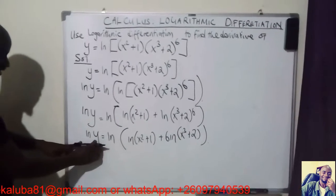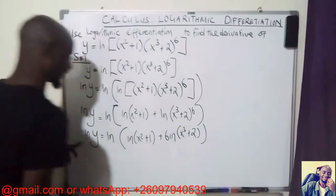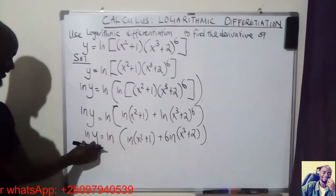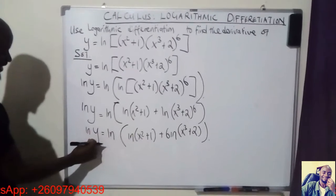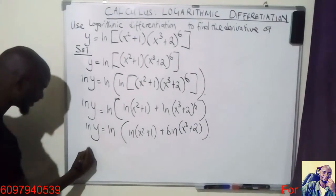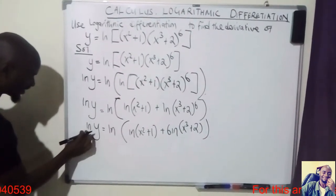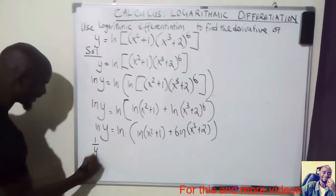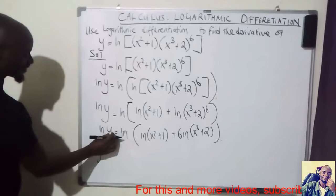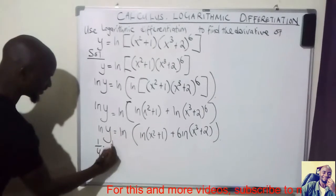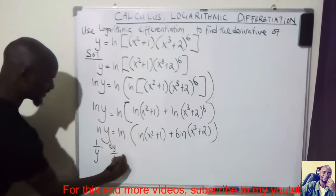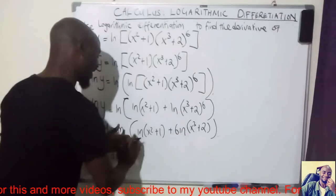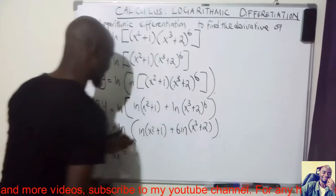Now I can differentiate both sides. We have ln y on the left, so differentiating using implicit differentiation I attach dy/dx. The derivative of ln y is 1/y, so I have (1/y)(dy/dx) on the left. On the right I will differentiate ln(x² + 1) + 6·ln(x³ + 2), using the chain rule for each term.